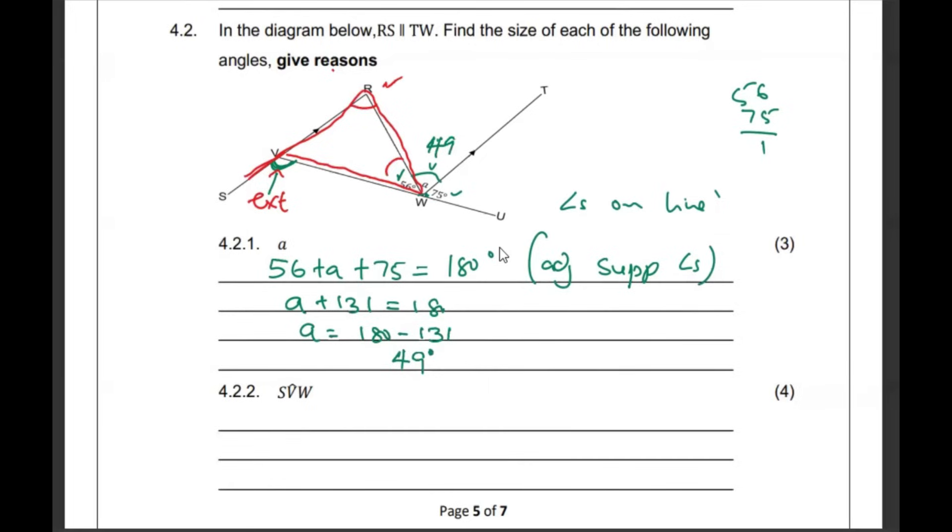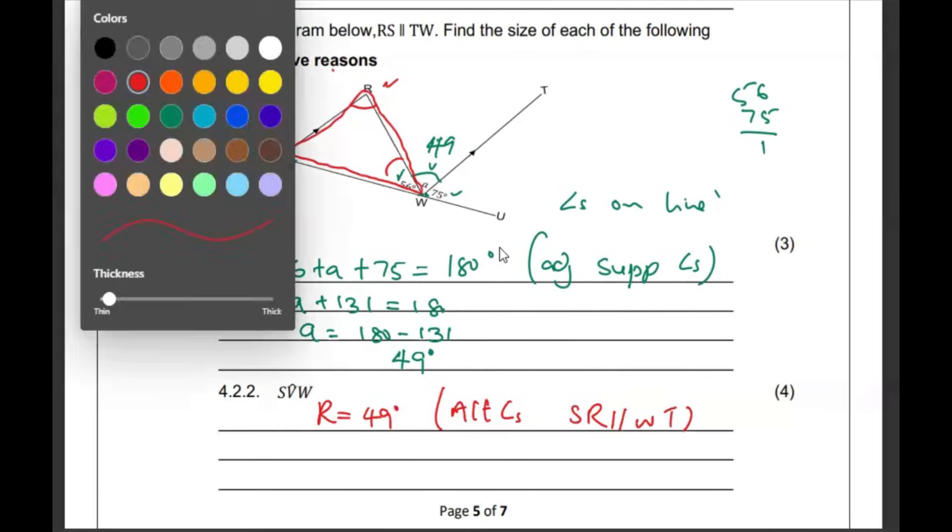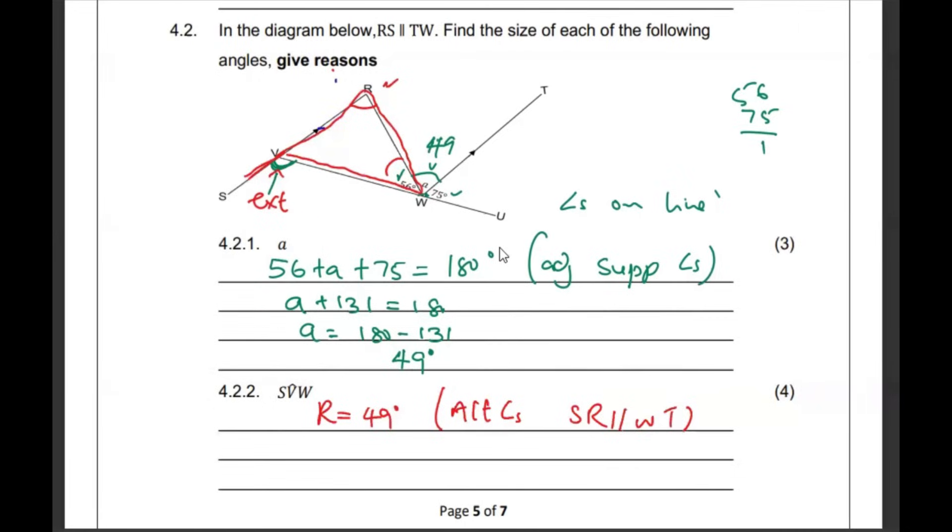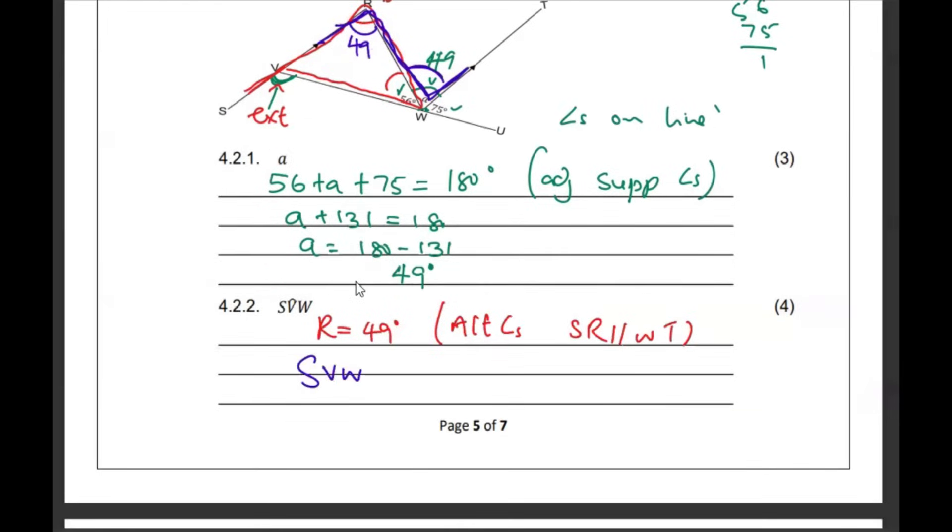So, let's start by finding R. I'm going to say that R is 49. Those are alternate angles because SR is parallel to WT. We're seeing a Z or rather N by the corners here. And if that's the case, this angle and that angle will be the same. Then we can go ahead and say that SVW is going to be 49 plus the 56, reason the exterior angle of a triangle. 49 and 56, that's going to be 105 degrees.